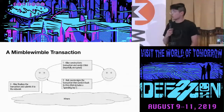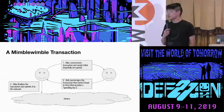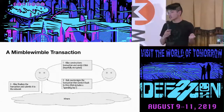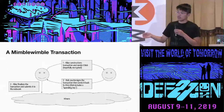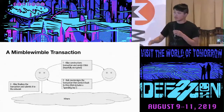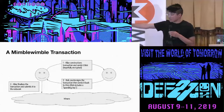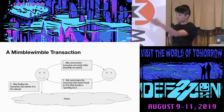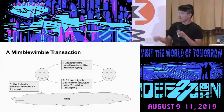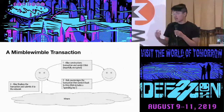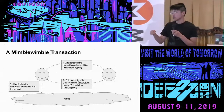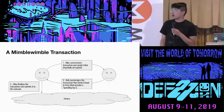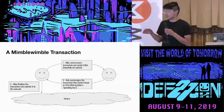Let's explore what a MimbleWimble transaction looks like. Instead of talking about the cryptography, we'll talk about the interactions. In a normal Bitcoin, Monero, or nearly every other cryptocurrency transaction, you know someone's address, sign a local message, and submit it - you don't need to interact with the other party. However, in MimbleWimble it's very different. Alice first constructs a transaction and sends it to Bob. Bob receives the transaction, countersigns it, and sends it back. Then Alice has to finalize the transaction as the third step before submitting it to the network.